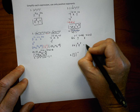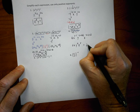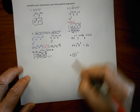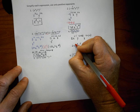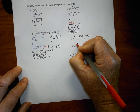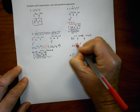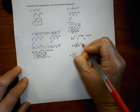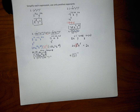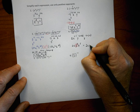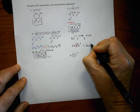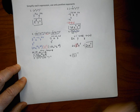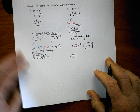When I simplify, I have 2x, and y to the zero power equals one, so the y's are insignificant and drop out of the final answer. The final answer for number four is 2x z to the fifth.